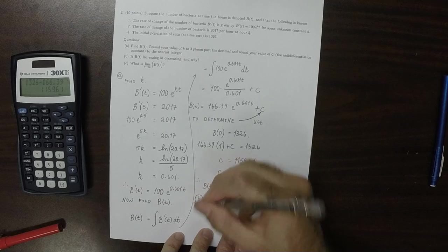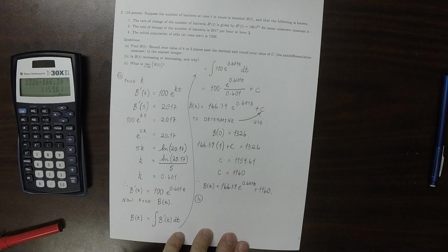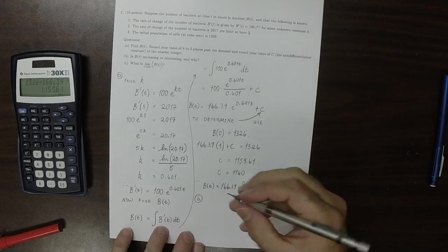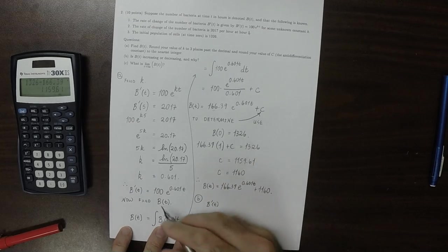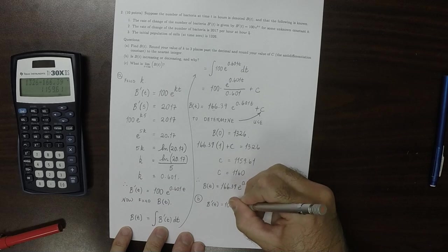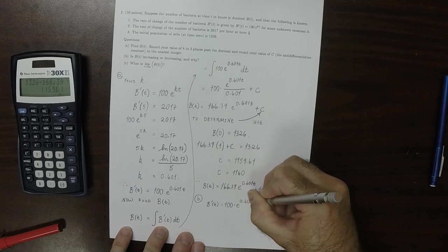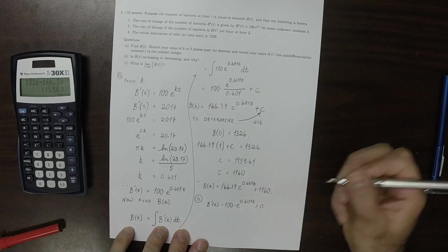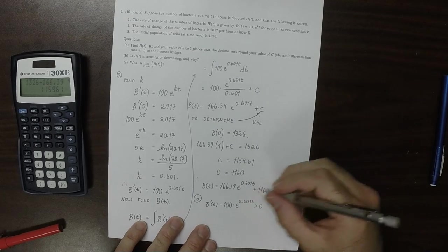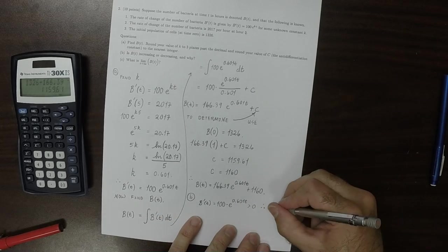Part b. Is b(t) increasing or decreasing? Well, the derivative, right here, the derivative is 100 multiplied by an exponential. And exponentials are always positive, so the derivative is always positive. And therefore, b is always increasing.